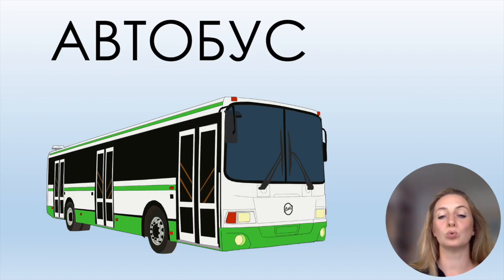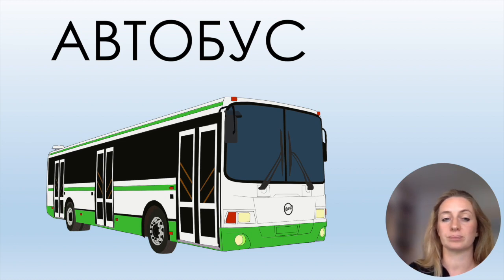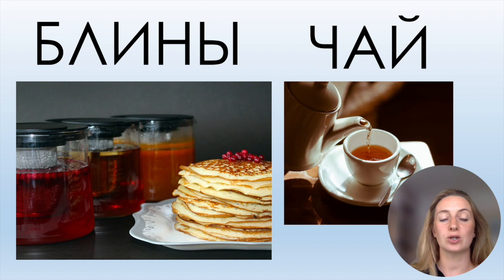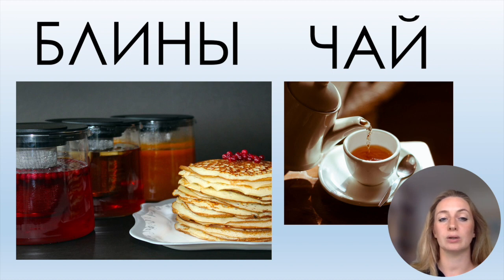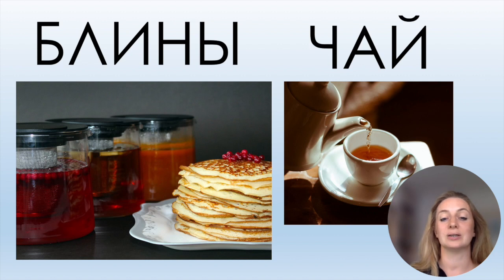АВТОБУС. Then a traditional Russian dish: БЛИНЫ — pancakes. And ЧАЙ. Russian people drink a lot of tea. ЧАЙ. БЛИНЫ and ЧАЙ.